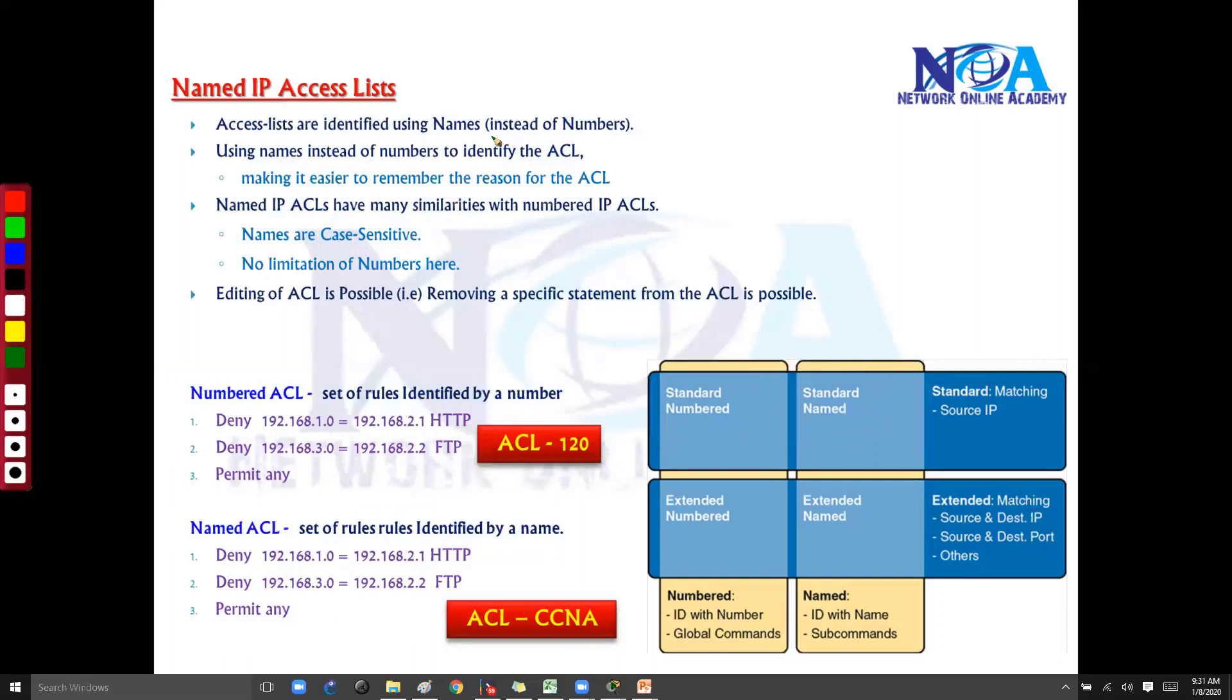The basic difference between the name and the number is we are just using names instead of numbers. The rest of the features remain the same, which means the way the standard ACL works, it's the same thing in either numbered or named. The working principle, the rules, everything remains the same in the named ACL as well. Of course, the way you write the command will differ slightly, but the working principle, the way they work, the direction, everything remains the same.